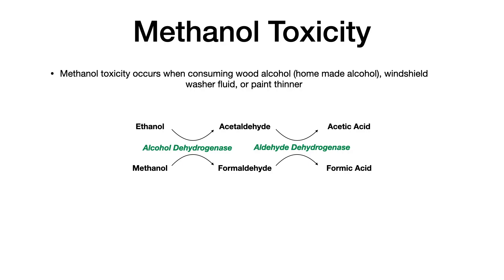Understanding both sides of this pathway will help you understand why fomepizole is the correct answer. Fomepizole inhibits alcohol dehydrogenase, which inhibits the conversion of methanol to formaldehyde and then to formic acid. Disulfiram inhibits aldehyde dehydrogenase, which means it inhibits the conversion of formaldehyde to formic acid. In methanol toxicity, what's causing the symptoms is the excess formation of formic acid. Formic acid is very toxic to the optic nerve, so patients present with visual changes. These substances, especially formic acid, cause CNS depression, nausea, vomiting, and altered mental status.